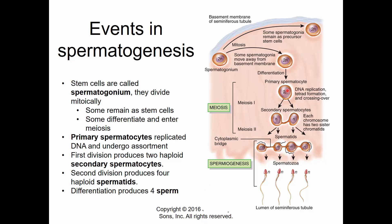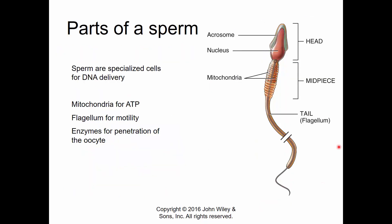Sperm are very specialized cells — essentially DNA delivery devices. In the midpiece, many mitochondria loop around and produce ATP, powering the microtubules in the flagellar tail so it can whip and propel the sperm. There is a haploid nucleus covered by an acrosome, which is filled with enzymes that allow the sperm to penetrate the cells surrounding the oocyte to enable fertilization.